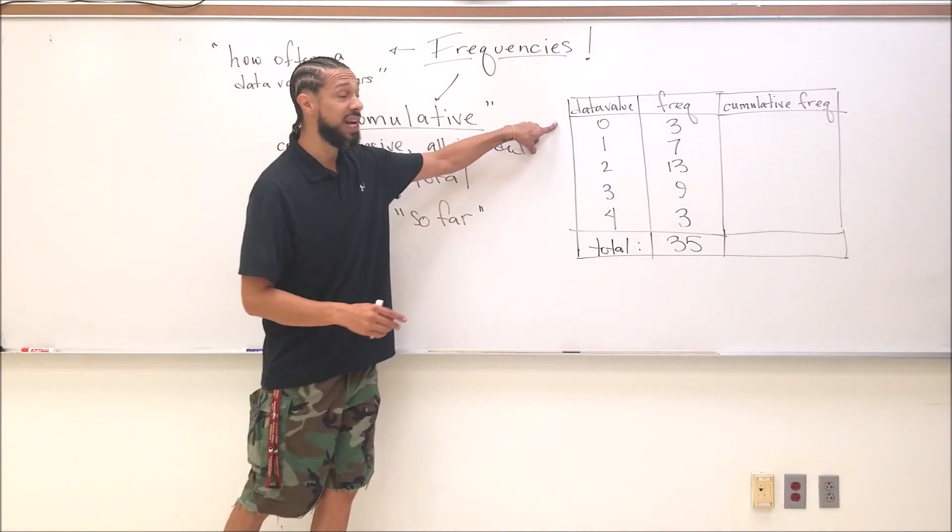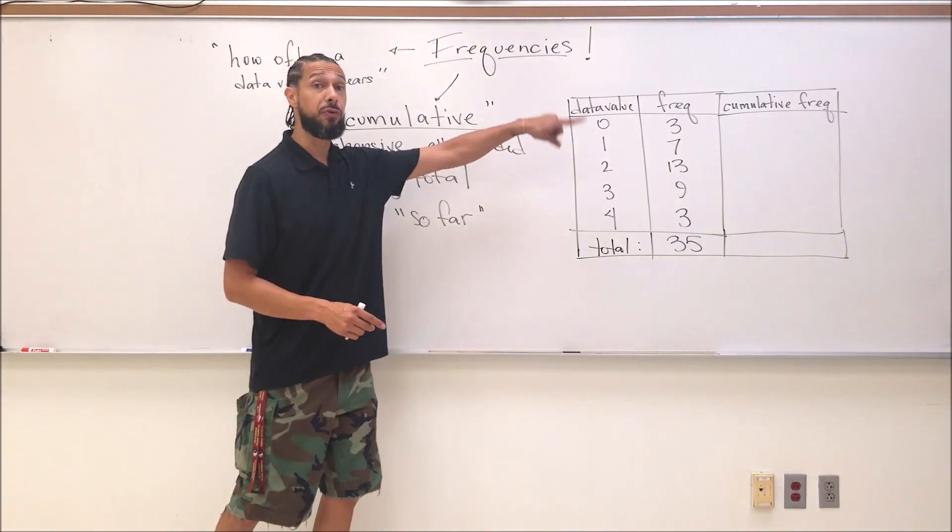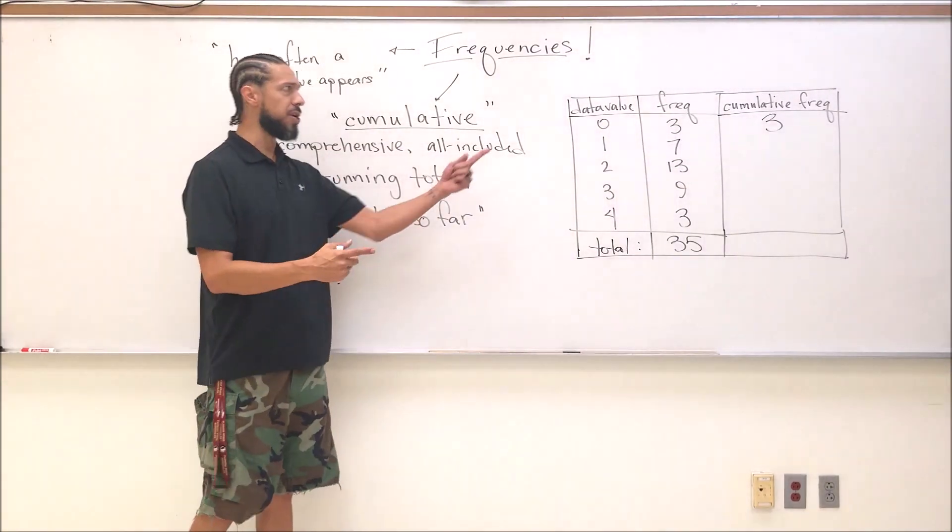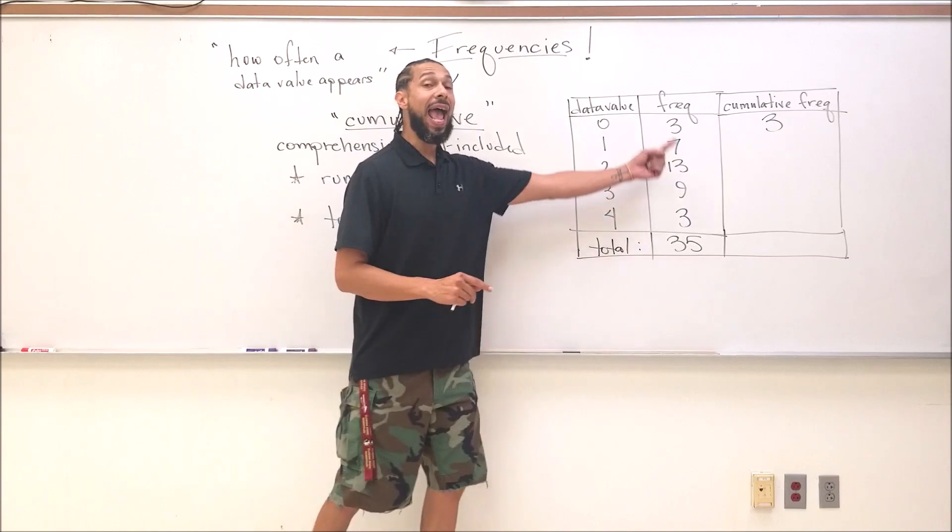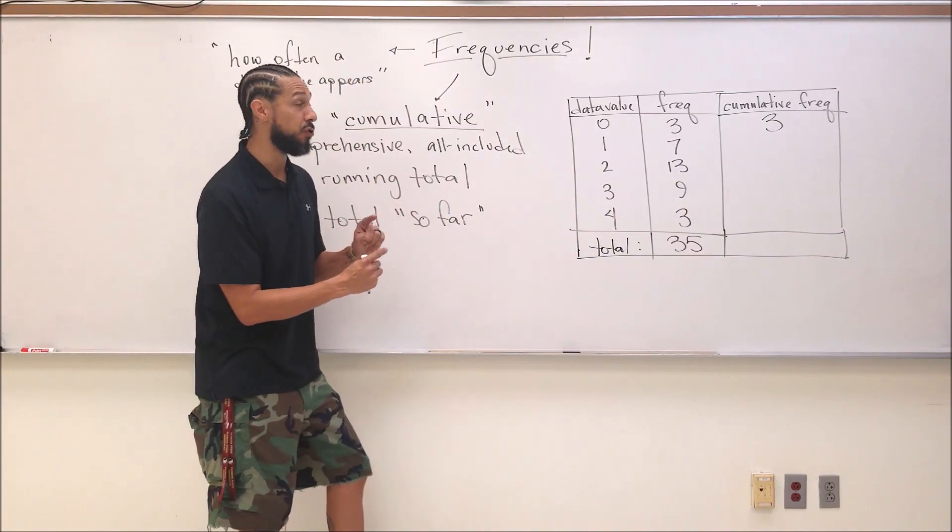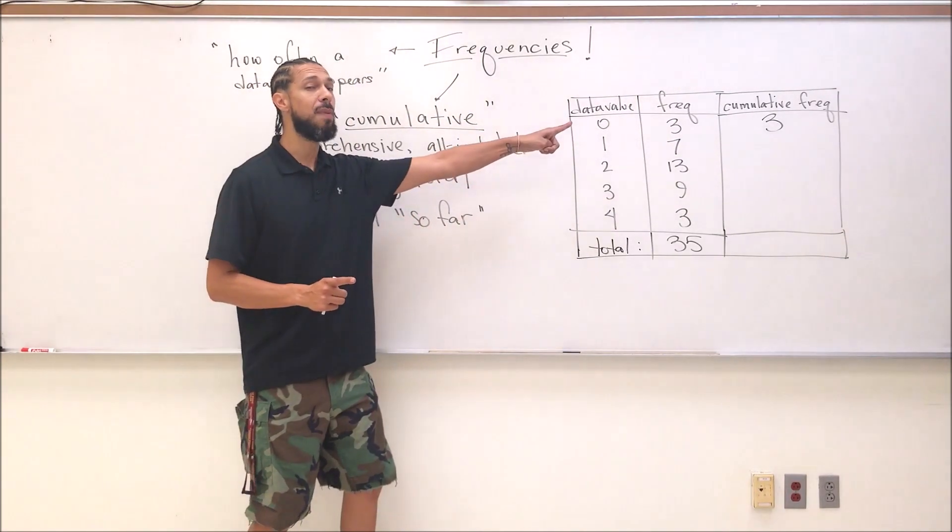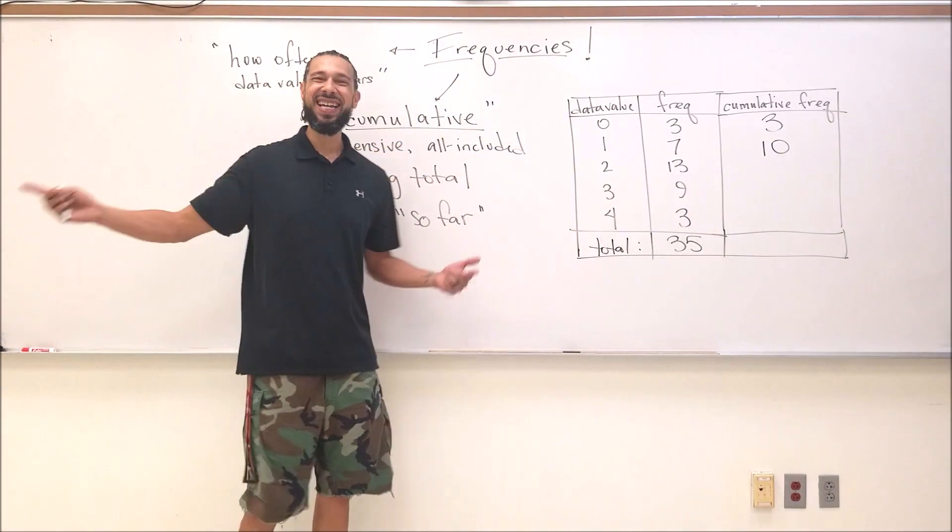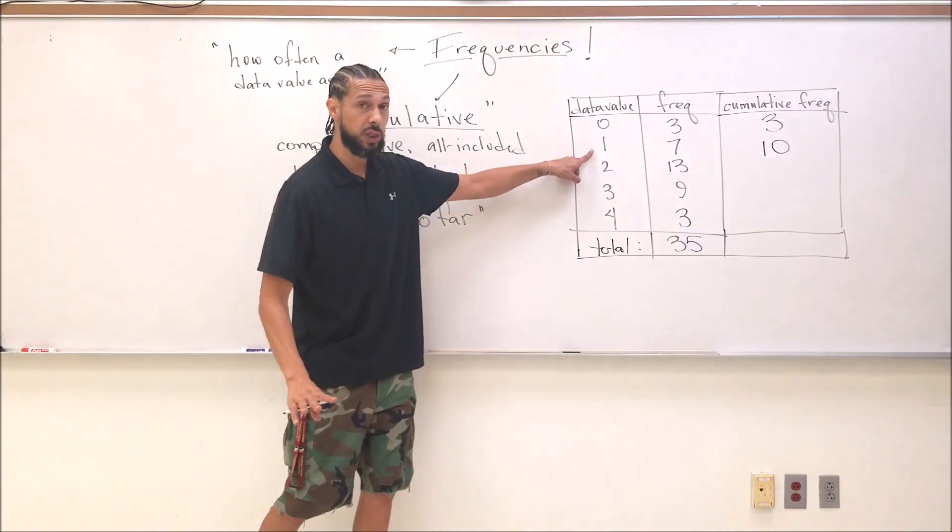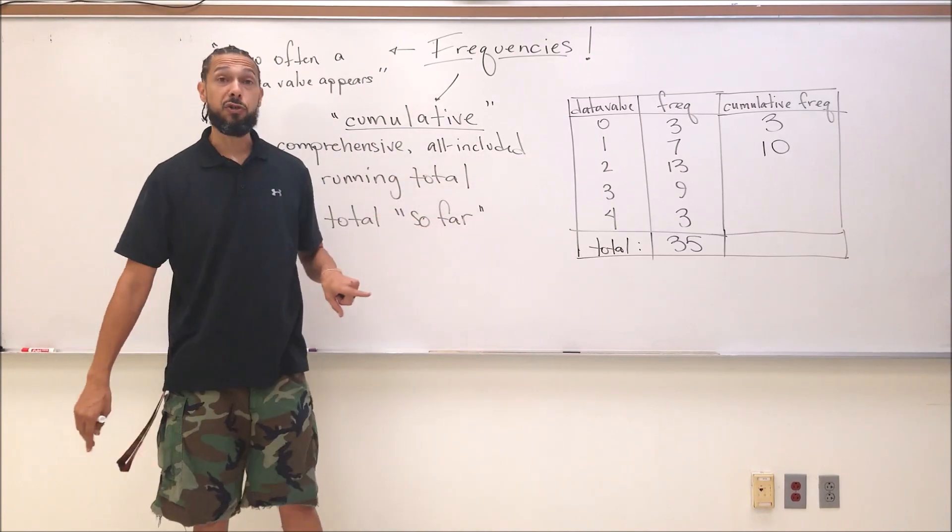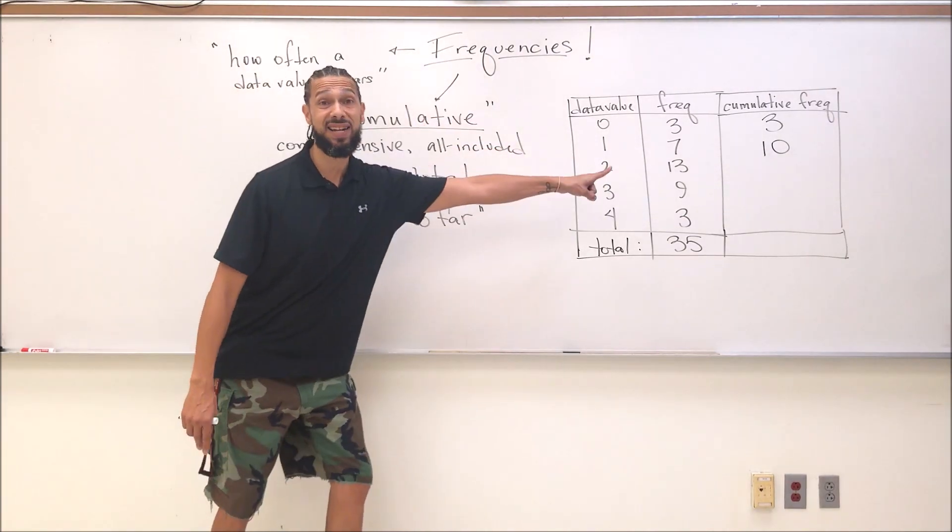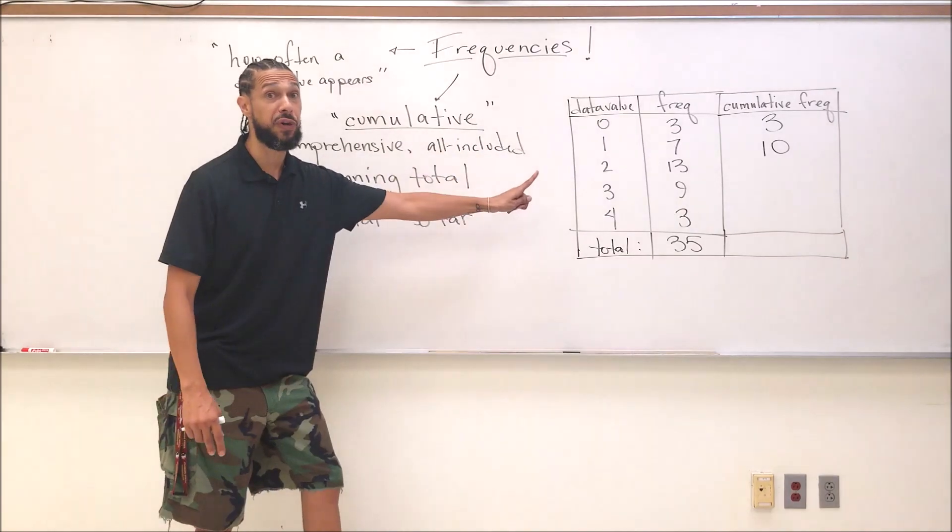First line, first data value of zero - we have a frequency of three. There are three zeros in my list, so my total so far for number of data values is exactly right, three. Now when I add in the ones, how many ones did I have again? Seven. When I add those seven data values to the three data values I have before, what's my running total now? Exactly right. So far, up to this point, including zeros and ones only, I have 10 data values. Now when I throw in the twos, how many twos are there? Thirteen.